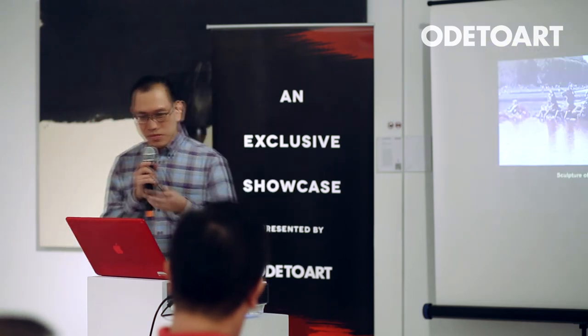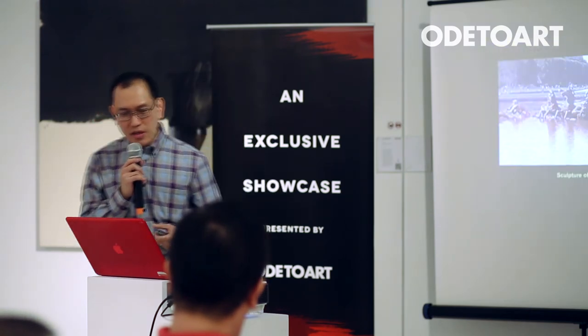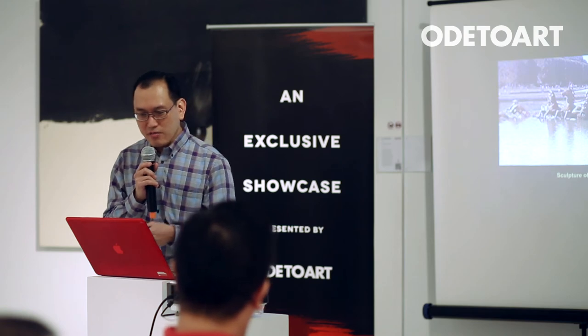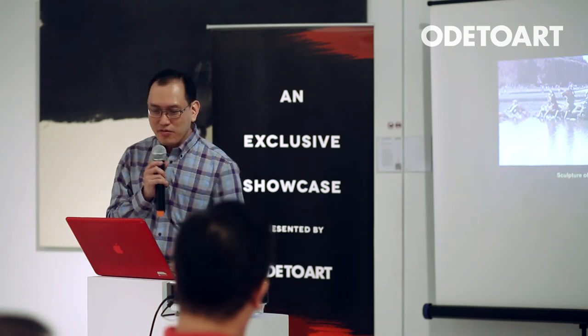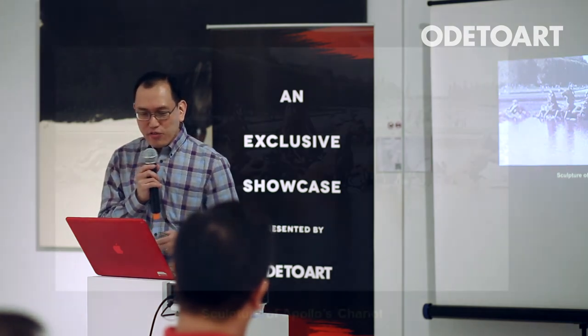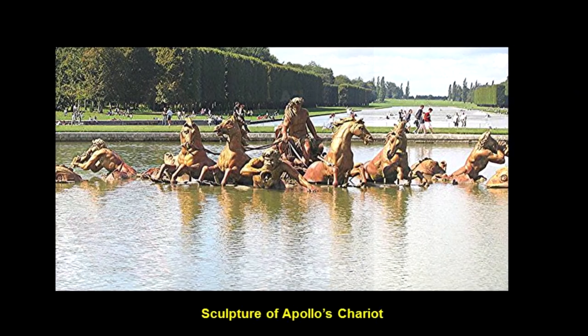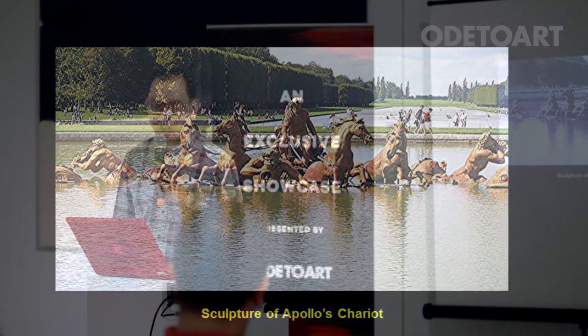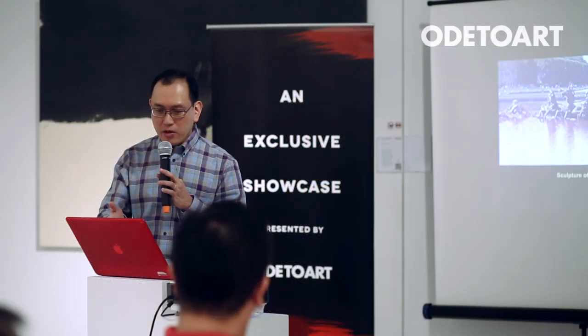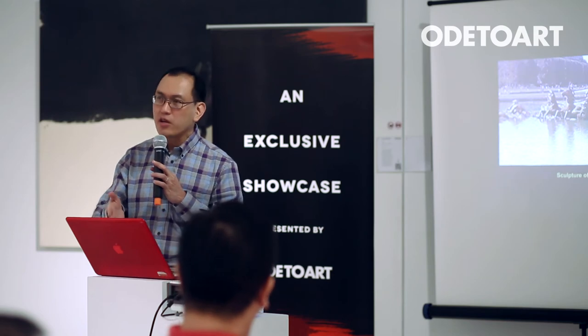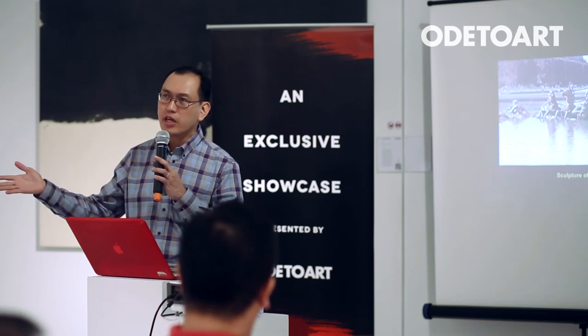In the garden you'll find sculptures like Apollo's chariot — Apollo used to ride his chariot across the sky — which is a clear allusion to the king himself, the sun king.